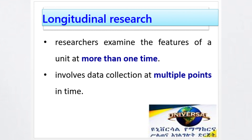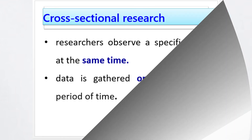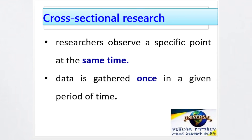The other type is longitudinal research. As stated, the classification of research by time is longitudinal or cross-sectional. Longitudinal research examines the features of a unit at more than one point in time — it involves data collection at multiple points in time. Cross-sectional research involves surveys conducted at a specific point in time, where data is gathered once.